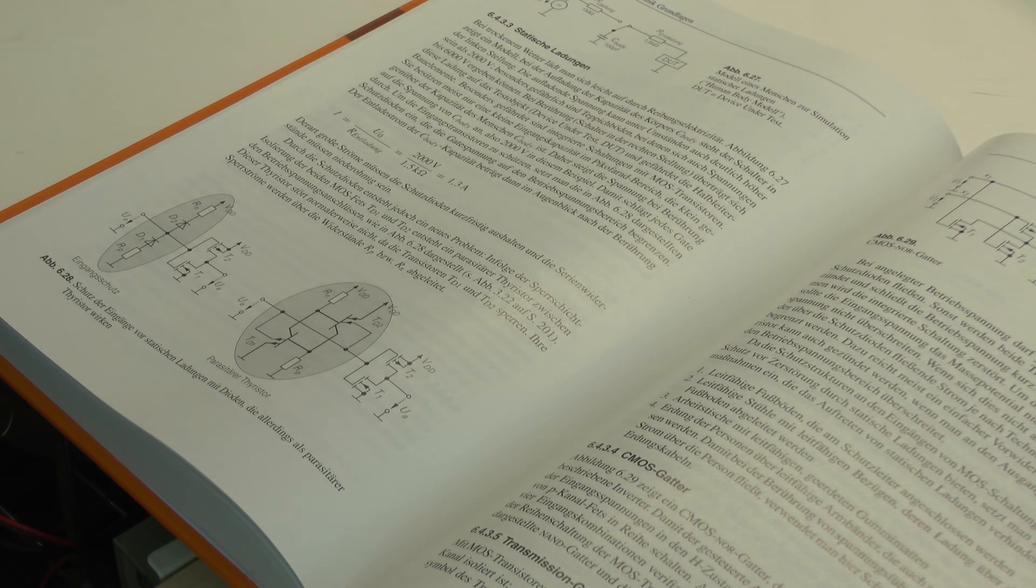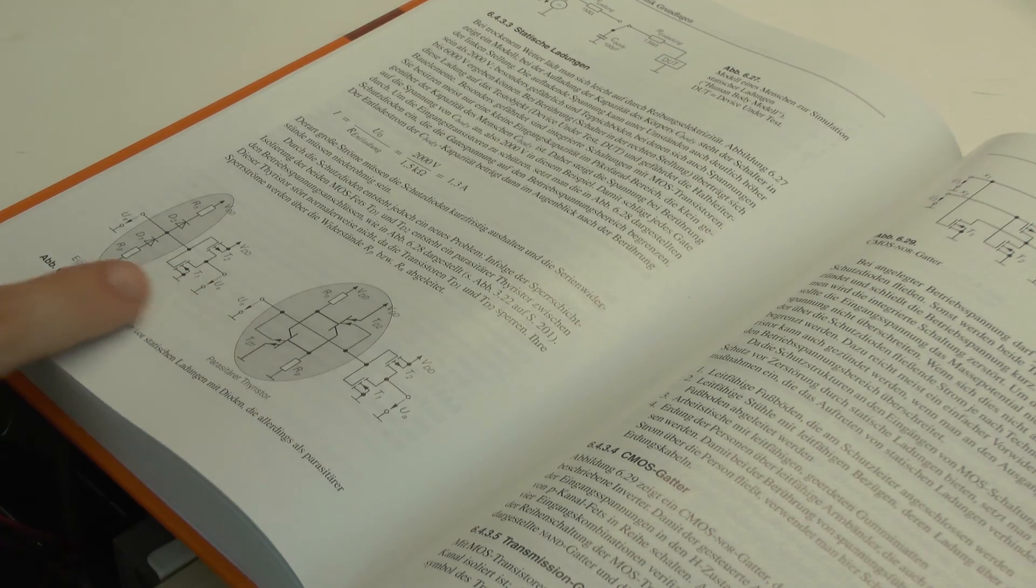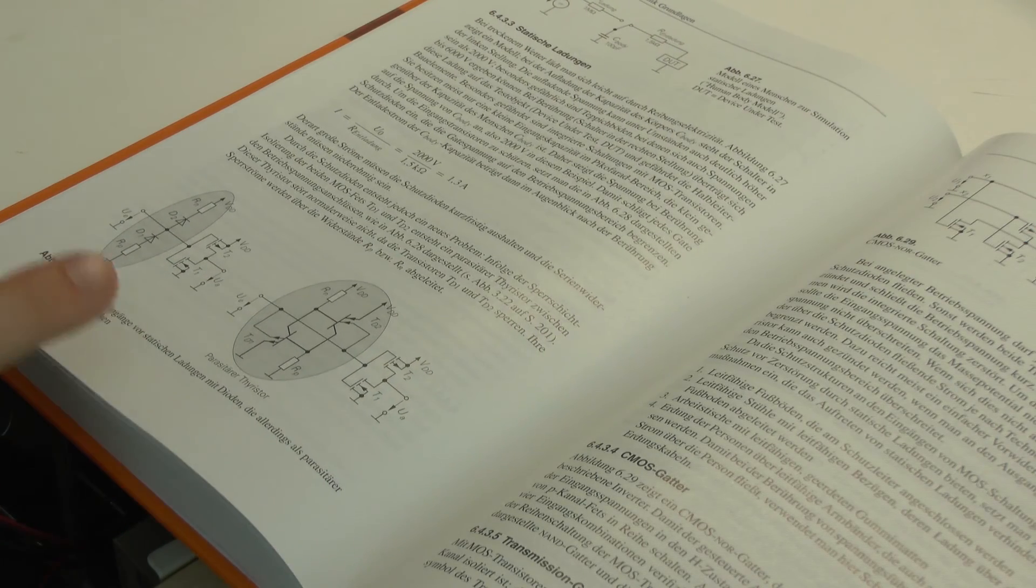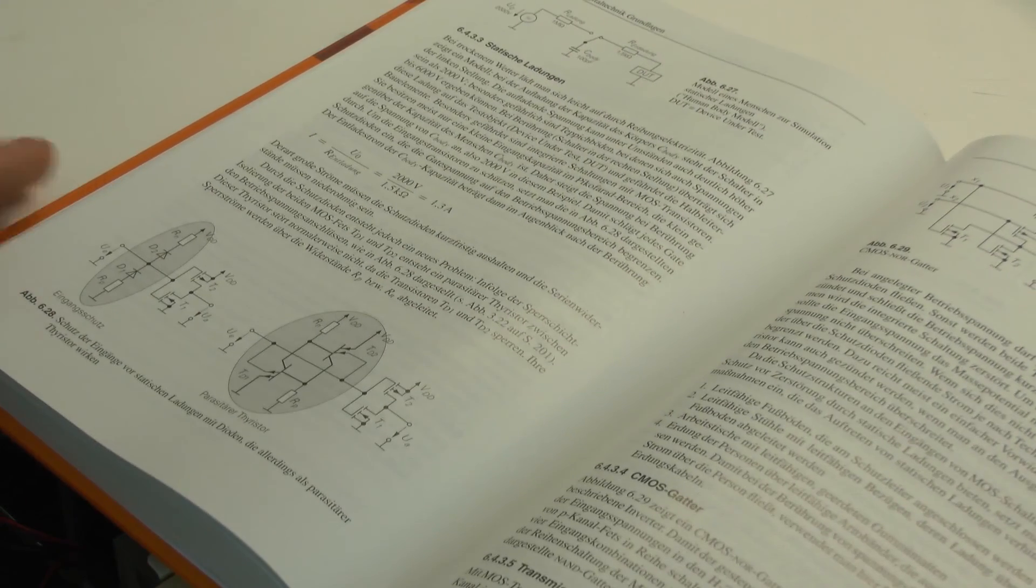Let us look at Tietze and Schenk next. In Tietze and Schenk we find a basic diode circuit and some basic explanation on a human body model.